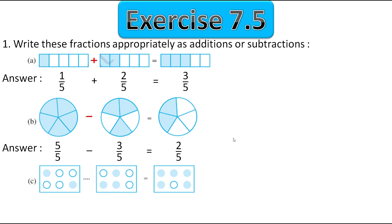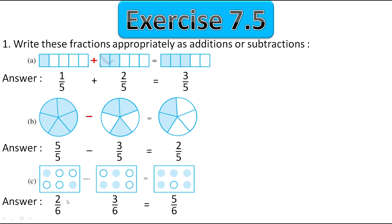In the third one we have rectangles with 6 circles and some circles are shaded. In the first one two circles are shaded, so the fraction is 2 upon 6. Here three circles are shaded, so 3 upon 6, and here five circles are shaded, so 5 upon 6. The denominator is kept as it is, and if we add 2 plus 3 we get 5. Therefore we have to do addition here, so the plus sign will come.